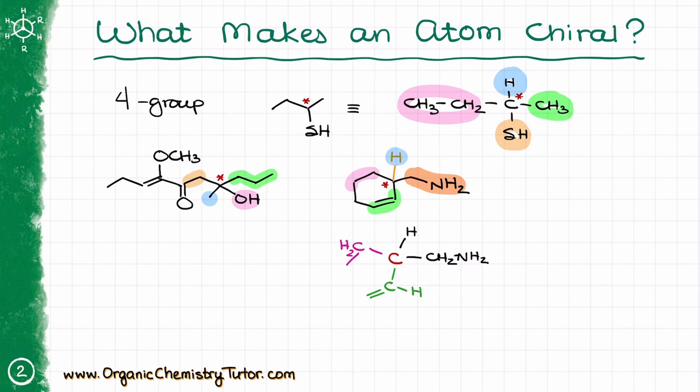Do not stop at just the first atom or first part of the group. Keep analyzing until you find the difference or the group ends. If you have a cycle, keep following it until you find the difference. If you do not find any difference, both sides of your cycle are going to be the same, which means the atom connected to that cycle cannot be chiral.